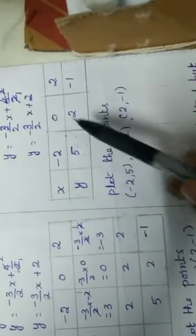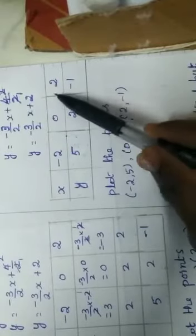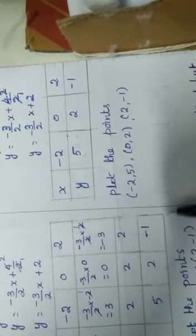And then, x minus 2, y equal to 5; x equal to 0, y equal to 2; x equal to 2, y equal to minus 1. Plot the points. Now we have to draw the graph.